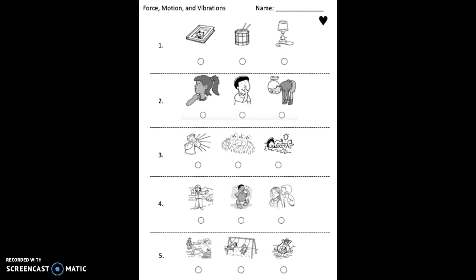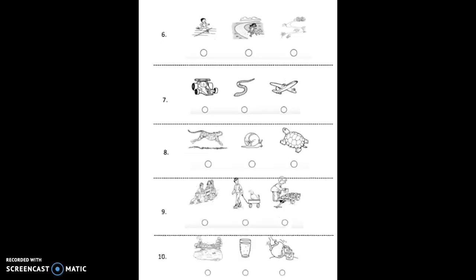Now you're going to flip your paper over to the back so that you can see the number six at the top. Look at the three pictures. Which picture shows a child moving in a straight line?